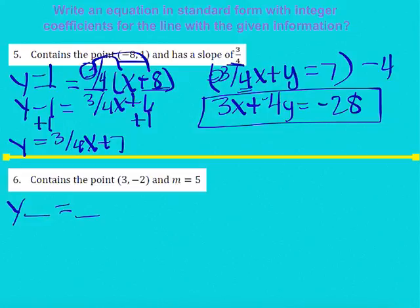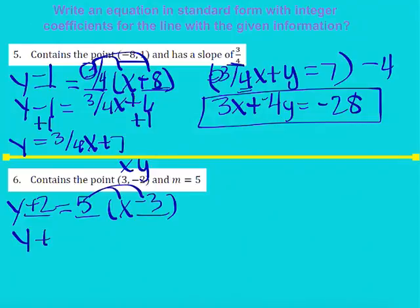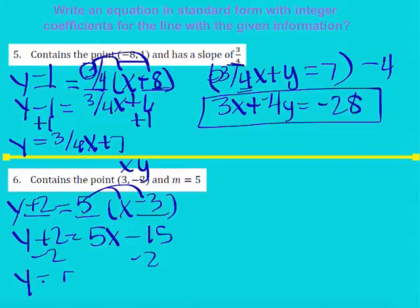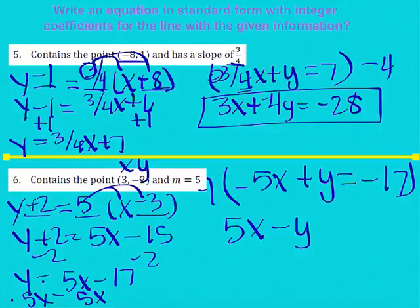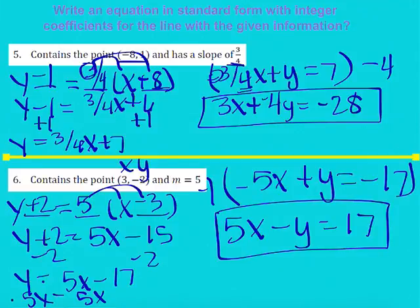Same thing on number 6. Let's set up our puzzle: opposite of my Y coordinate — remember points go X, Y — my slope, opposite of my X coordinate. Distributing gives Y plus 2 equals 5X minus 15. Subtracting 2 from both sides gives Y equals 5X minus 17. Subtracting 5X from both sides gives negative 5X plus Y equals negative 17. The X coefficient out front is negative, so I multiply everything by negative 1. Then I have 5X minus Y equals positive 17.